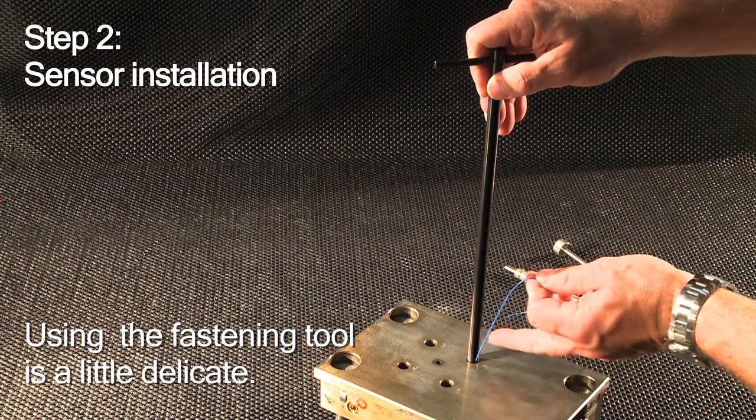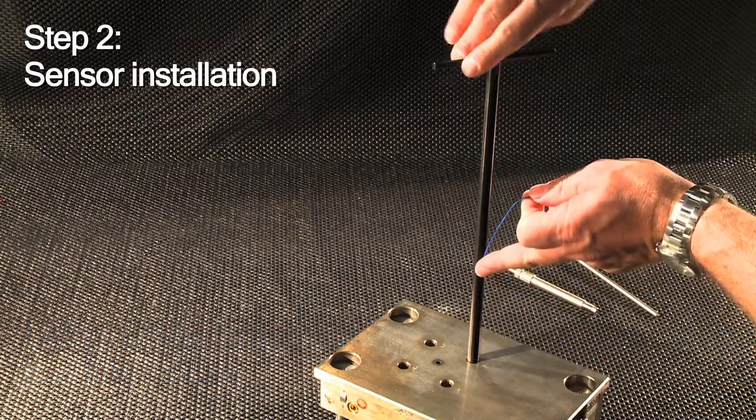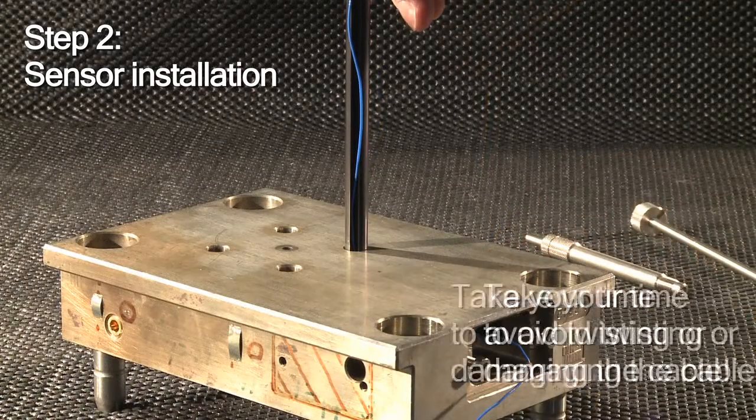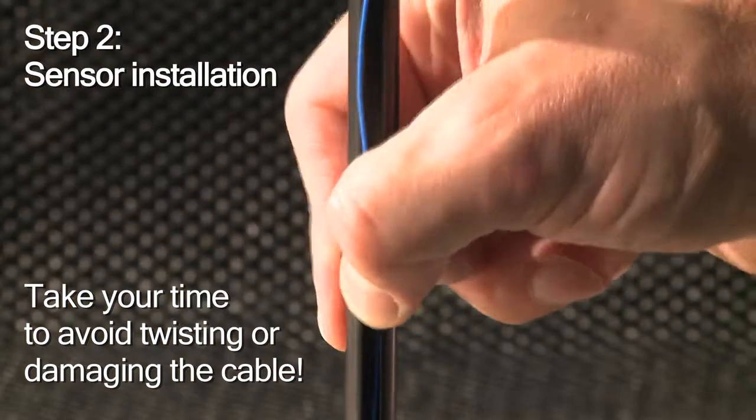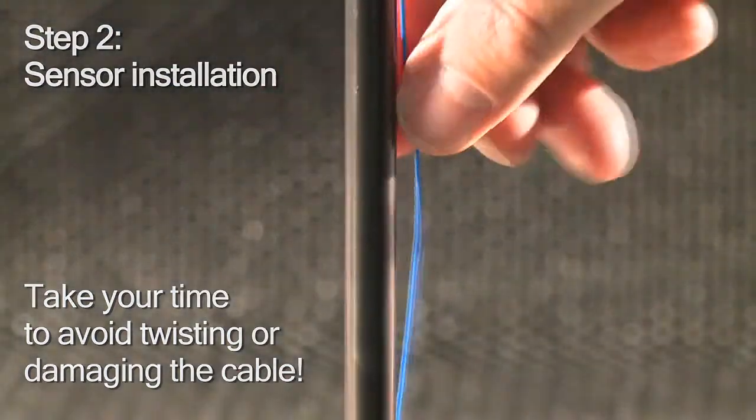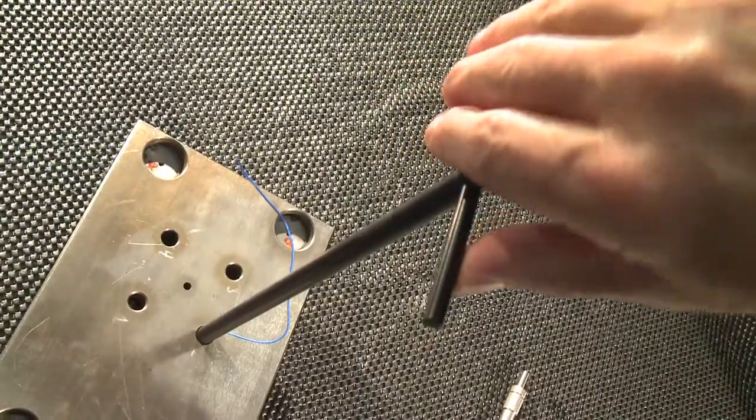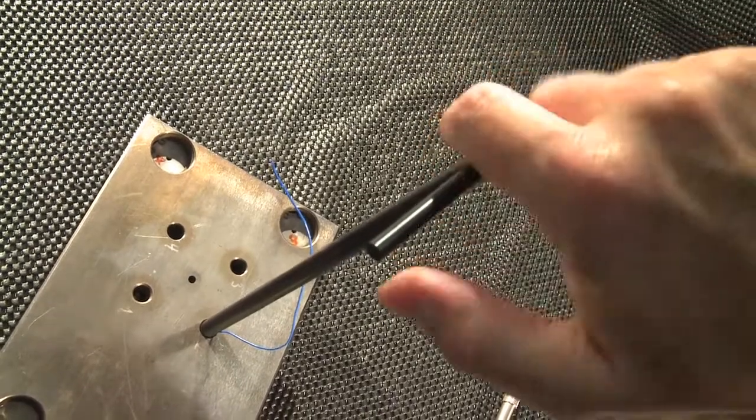Using the mounting nut fastening tool is a bit tricky. As you can see, it has a slit for the cable. It's very important that you take your time. Be careful not to damage the cable. Finally, you tighten manually until the sensor is seated firmly.